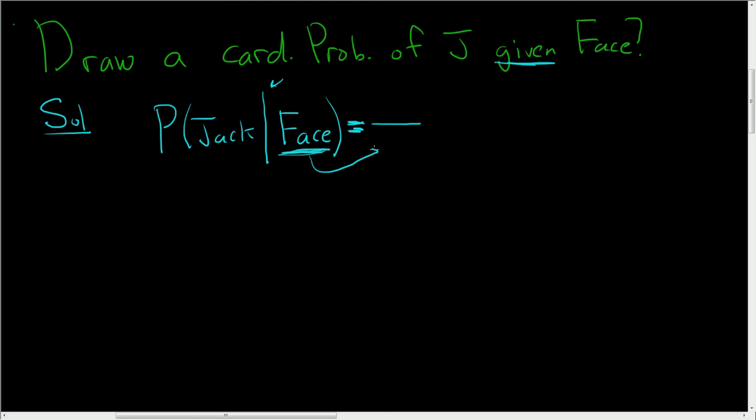So there are 12 face cards in a deck. We have the jack, the queen, and the king. Those are the cards with the faces of people on them, and 4 plus 4 plus 4 is 12. That's why they're called face cards.